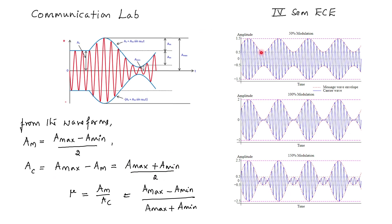There are three different cases of analysis in modulation: under modulation, ideal or perfect modulation, and over modulation. In under modulation, the amplitude of the message signal is less than the carrier amplitude — that is, AM is less than AC.